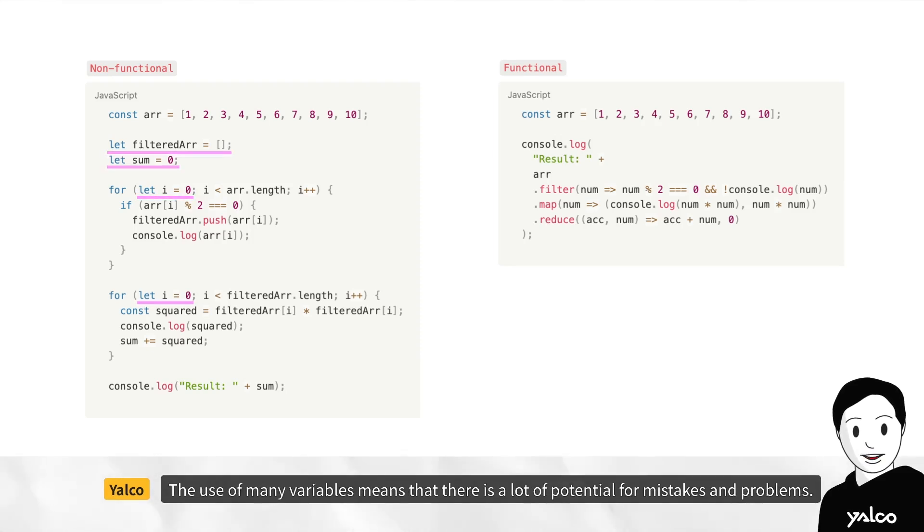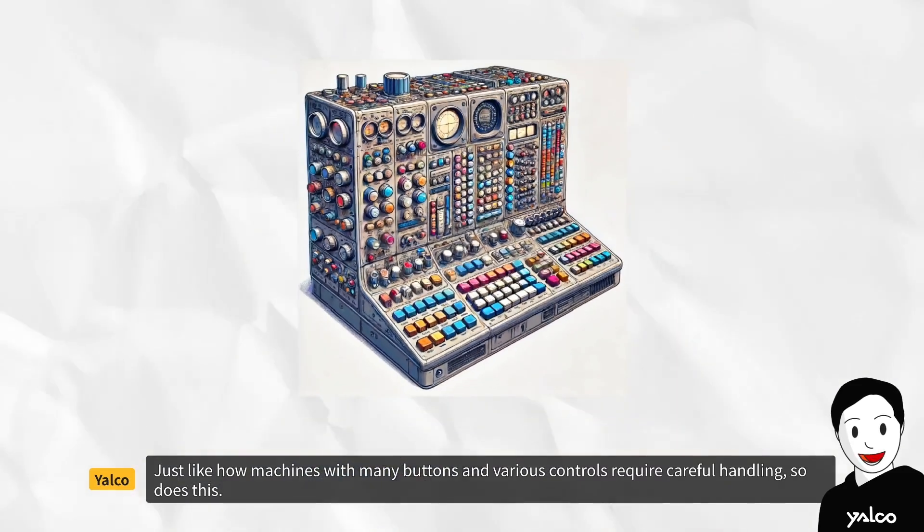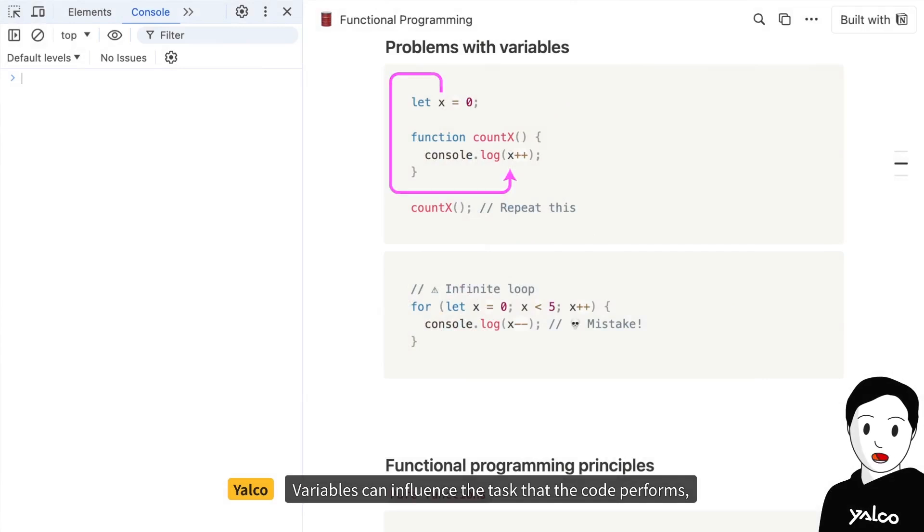The use of many variables means that there is a lot of potential for mistakes and problems. Just like how machines with many buttons and various controls require careful handling, so does this. Variables can influence the task that the code performs, and in turn, can be influenced by that task.